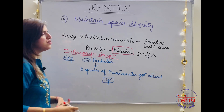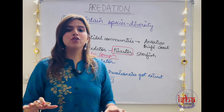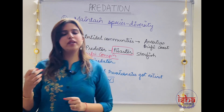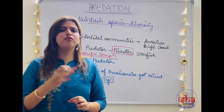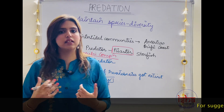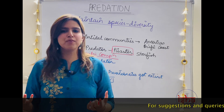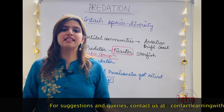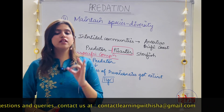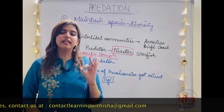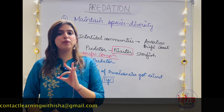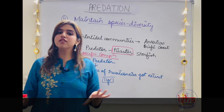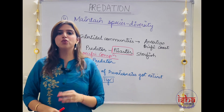Why were they facing this interspecific competition? In the absence of the predator, the prey population could not be kept in control. Naturally, whichever species had a greater ability to feed and capture resources would survive, but the rest would go extinct. Therefore, a predator is very important in an ecosystem — not only to maintain a balance and control population, but also to maintain diversity.